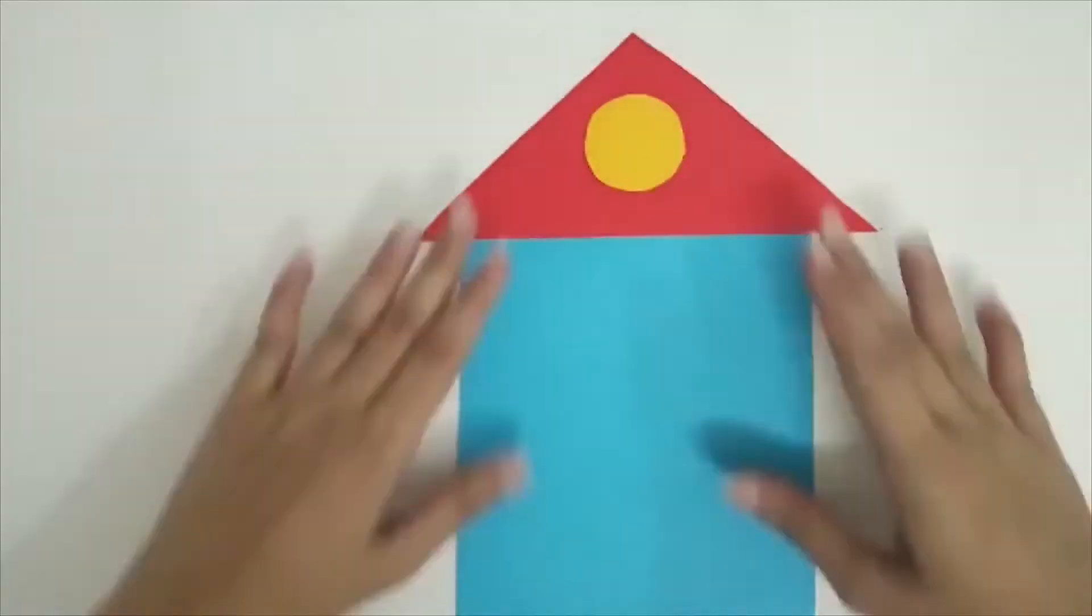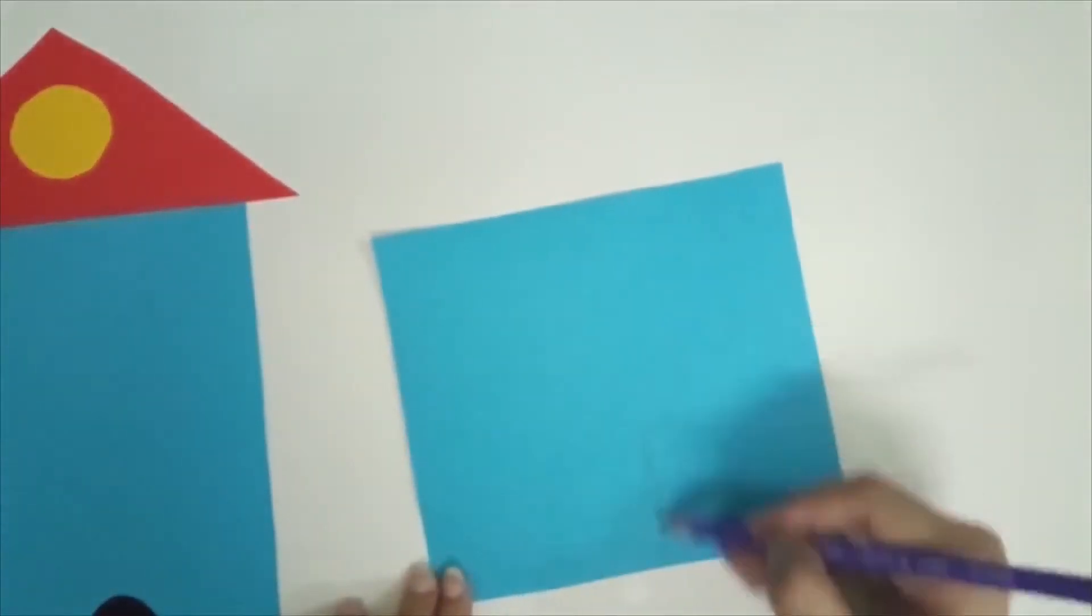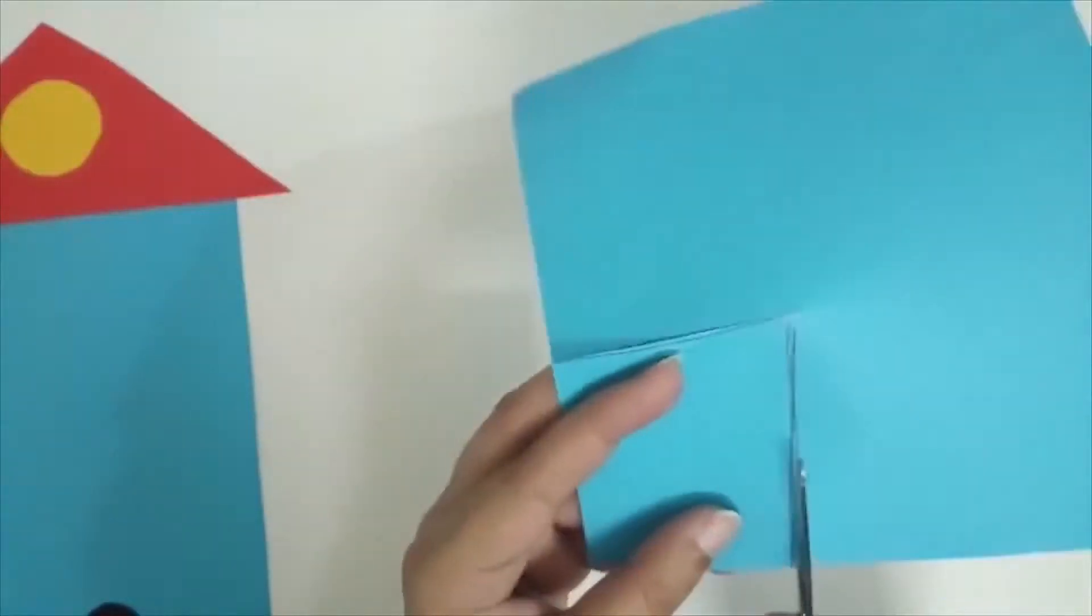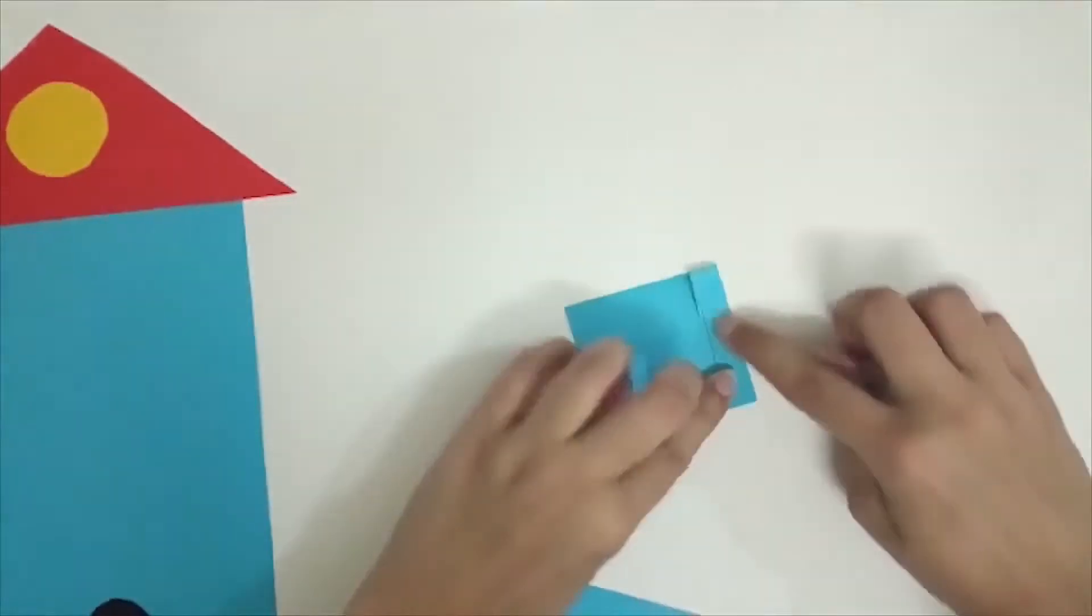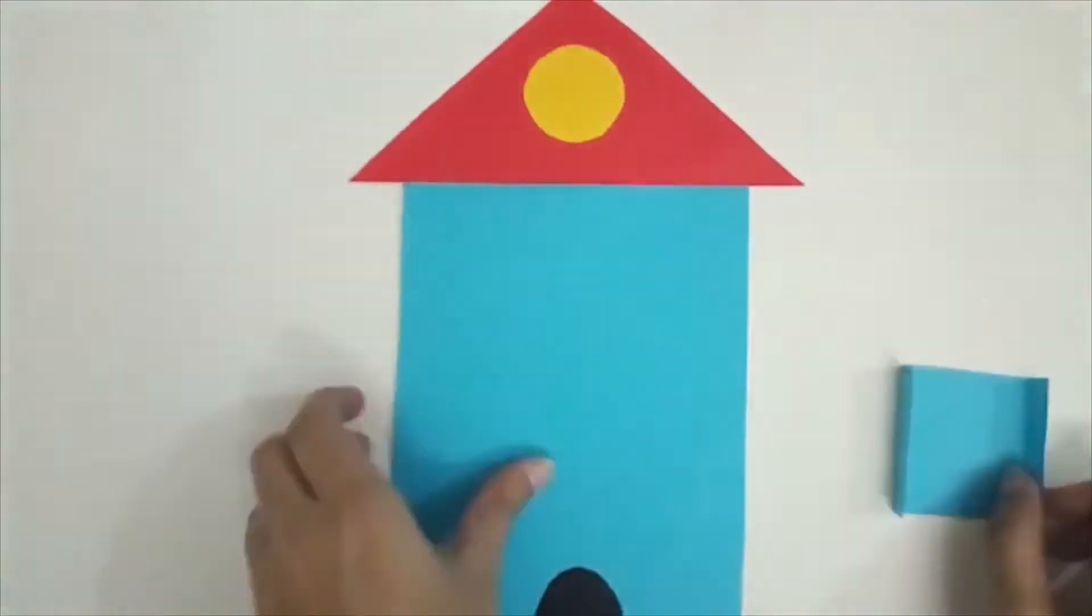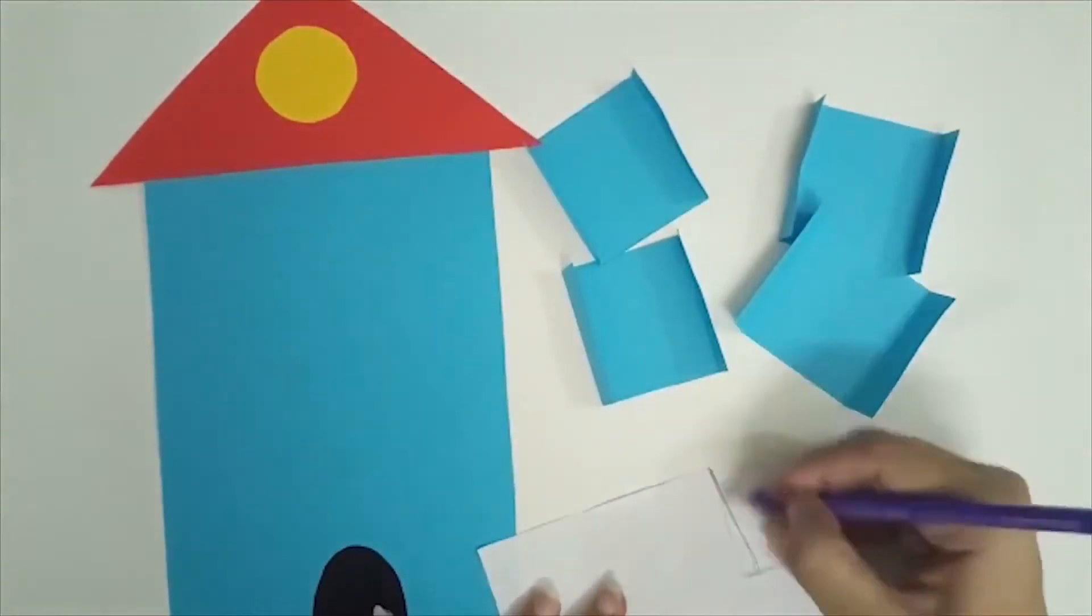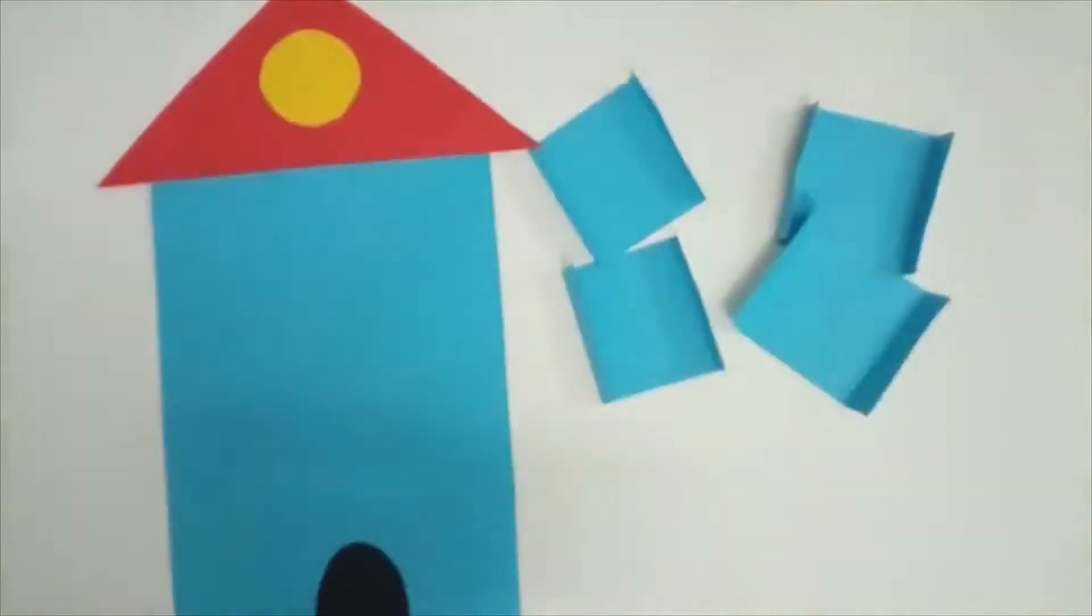Cut a U shape from black paper and paste it as a door. Now cut small rectangle shapes of any colored paper according to your family members and fold slightly by its sides. Cut squares of white paper and paste these squares as shown.